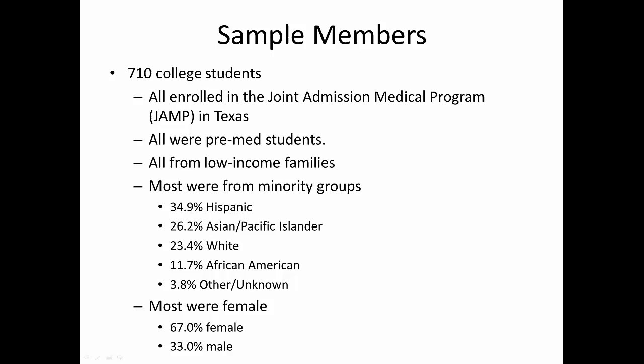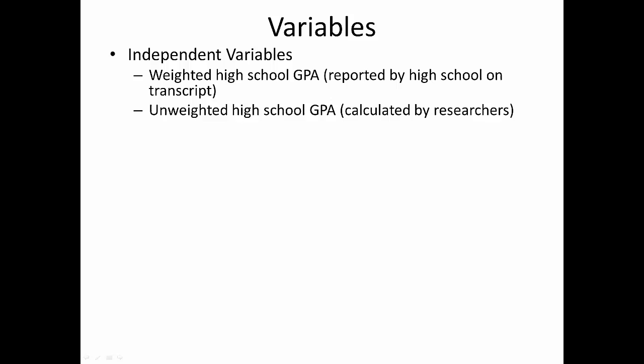Our sample consisted of 710 students in the Joint Admission Medical Program in Texas. This is an educational program that encourages students from communities that have a shortage of physicians to become doctors and then return to their hometowns to practice medicine. All of the sample members were low income, and they were disproportionately members of minority groups. As part of the admissions process, students must submit their high school transcripts. Almost all of the applicants attended high school in Texas, which is a state where most high schools report weighted GPAs. In our study, we took the school's weighted GPA and compared it to an unweighted GPA that we calculated to see which one was better at predicting college success.